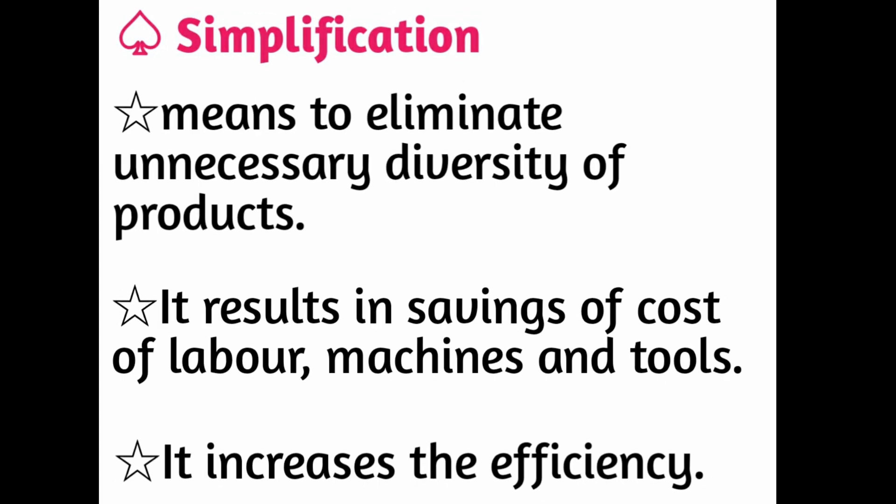Next we come to simplification. Simplification aims at eliminating unnecessary diversity of the product. It results in saving of cost — the cost of labor, machine and tools will be minimized. Simplification का मतलब होता है जो product की unnecessary diversity है, उसे eliminate करना। जैसे एक US की paper बनाने वाली company थी जो 2000 types के paper manufacture करती थी, और उनमें से कुछ types ऐसे थे जिनका difference इतना minute था कि आसानी से समझ नहीं आता था। यह unnecessary diversity थी, तो company ने उसे 2000 types से 200 types तक reduce किया।